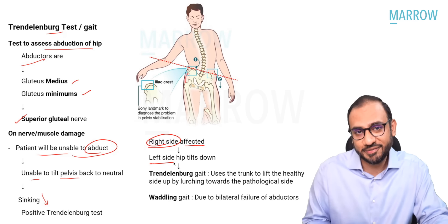Question five is a spotter question: identify the nerve injured in the given fracture. The X-ray shows the femur, tibia, fibula, and a fracture at the neck of the fibula. The correct answer is common peroneal nerve. The common peroneal nerve wraps around the neck of the fibula and divides into a superficial and deep branch. The deep branch supplies dorsiflexors of the ankle; the superficial branch supplies everters. This results in foot drop — the patient is unable to dorsiflex and evert the ankle.